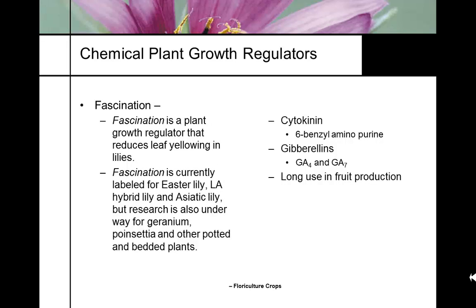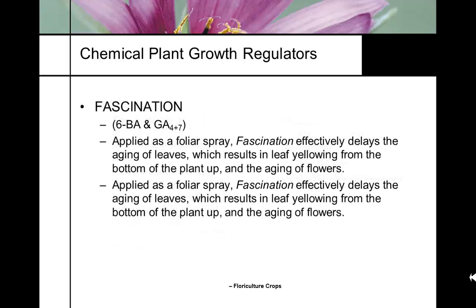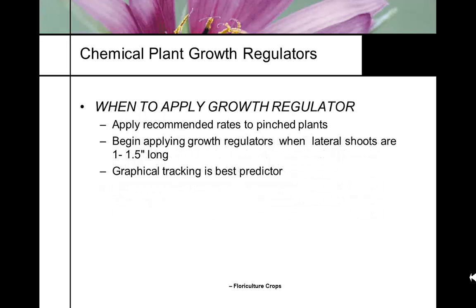Fascination is a blend of cytokinin — specifically 6-benzylaminopurine (BA) — and gibberellin. It was originally developed for the apple industry to improve fruit shape and give uniform ripening. We now use fascination as a legal plant growth regulator to maintain greenness of foliage in the cooler and to delay aging — it's essentially an anti-aging compound.